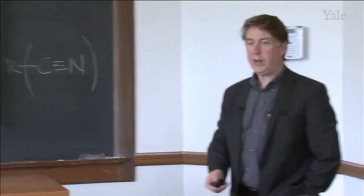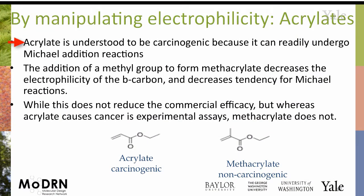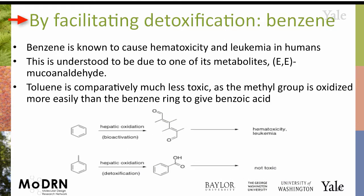We can look at acrylates — widely used polymer building blocks with wide levels of application. Just by adding on that methyl group, you're changing the electronic structure of the molecule, and you go from carcinogenic to non-carcinogenic. Similarly with benzene: benzene causes hemotoxicity as well as leukemia, but just by adding a methyl group and changing it into toluene, you get a dramatic reduction in toxicity.